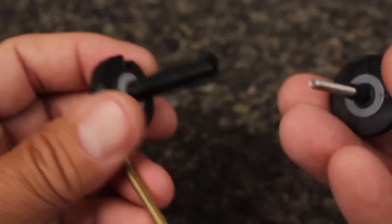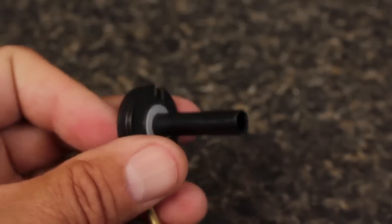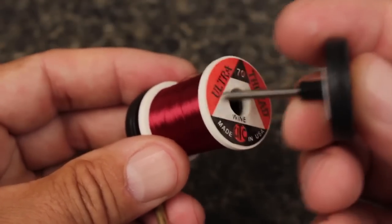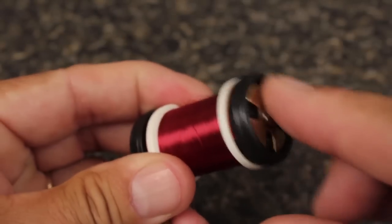Slip on any standard sized thread spool, reinsert the drag assembly, and give the tensioning knob a clockwise spin until it starts to click. Then run the thread through the bobbin tube.